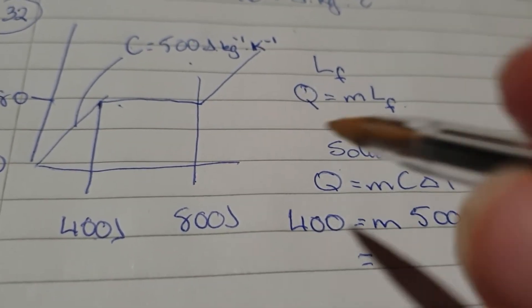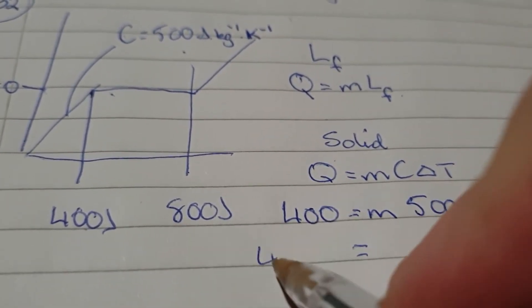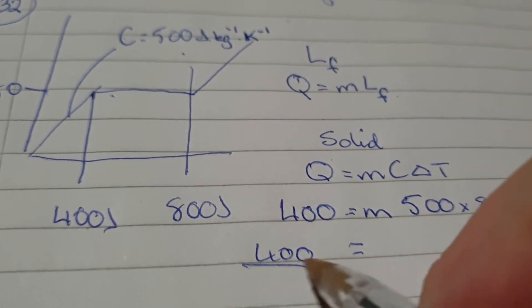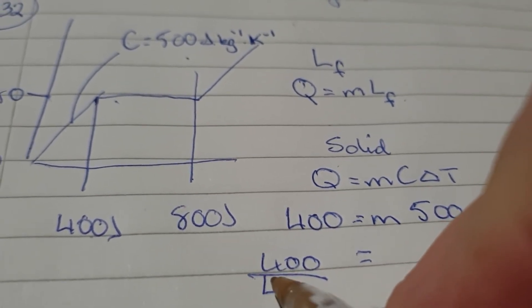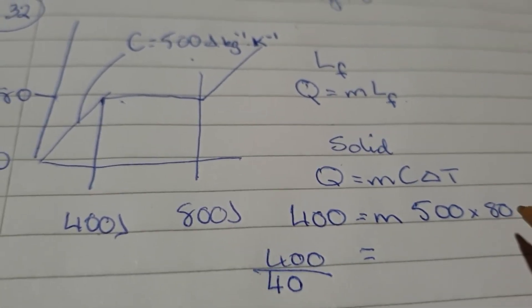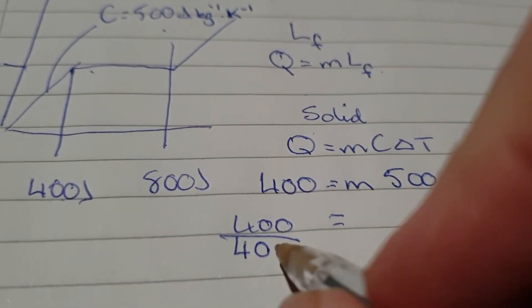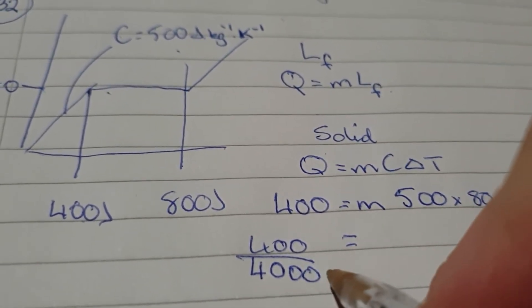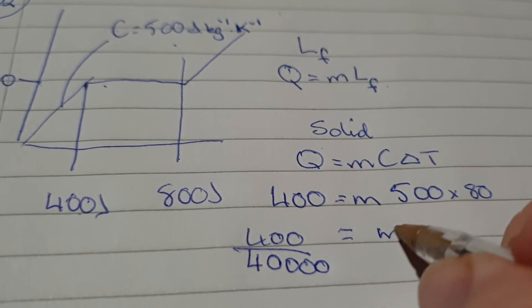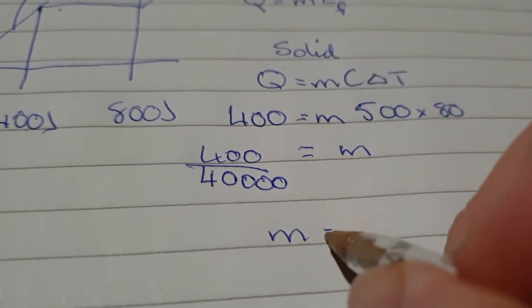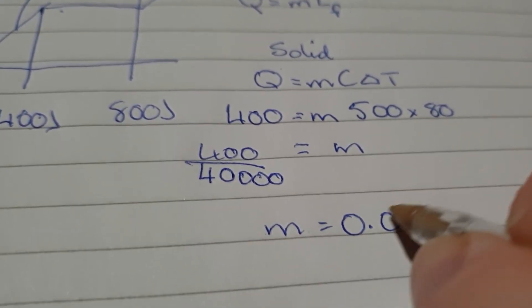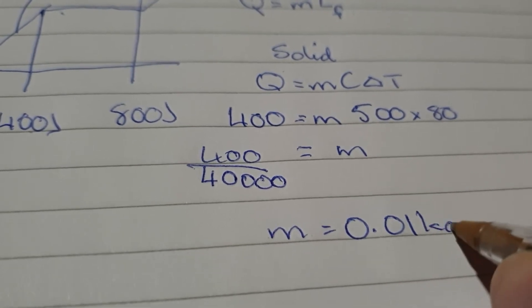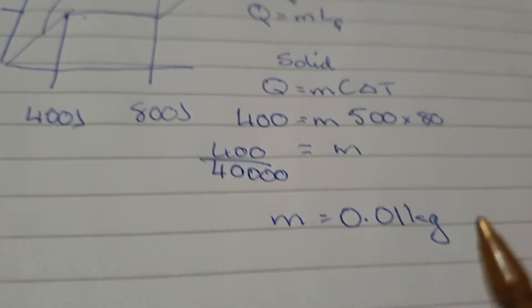So, that gives us 400 over 40,000. Oh, no, 40,000. One, two, three. Yeah, 40,000. One more. It's M. So, M equals 0.01 kgs.